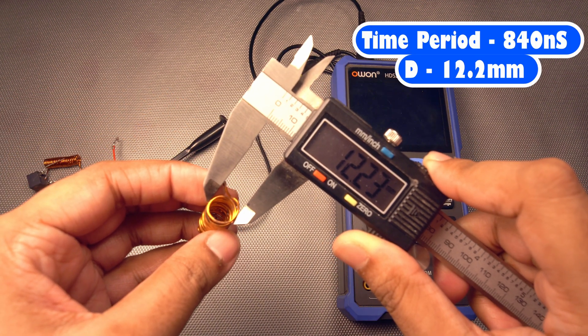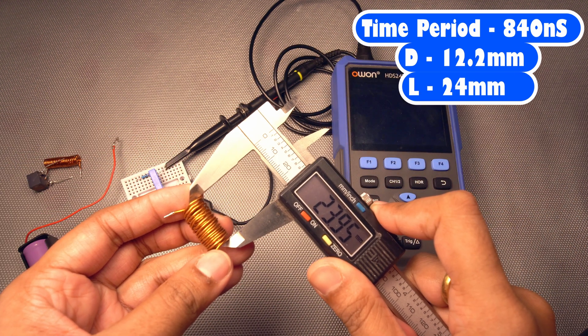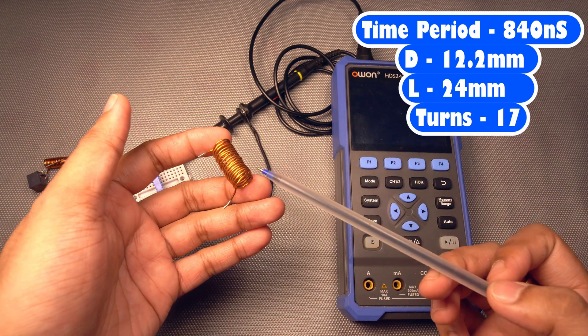And we will also measure the dimensions of this coil. Diameter is 12.22. Length is 23.95, we will consider 24. And this is having 17 turns.